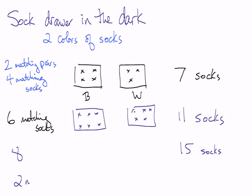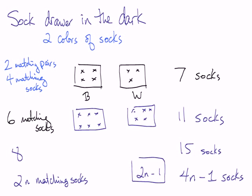If I have two n matching socks, then if I have four n minus one socks, that will do it. Because if I have, I can have two n minus one in one box, and two n minus one in the other box. So each of them has less than two n socks. If I put that together, that's four n minus two, and if I add one more sock, I have four n minus one socks, it has to go in at least one of the two boxes, and then I will have two n socks in that box. So that's the general case for my two colors.